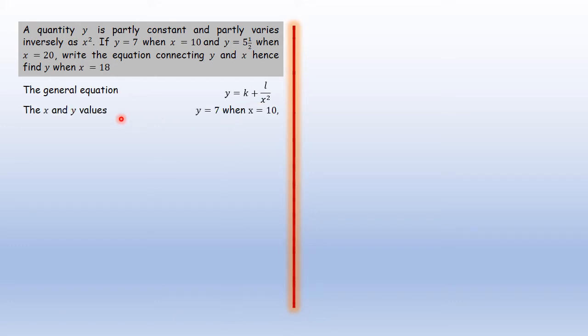We're given the values of x and y. When x = 10, y = 7. And when x = 20, y = 11/2. 11/2 is the same as 5.5. Therefore, we have two simultaneous equations which can be obtained from these sets of x and y values.